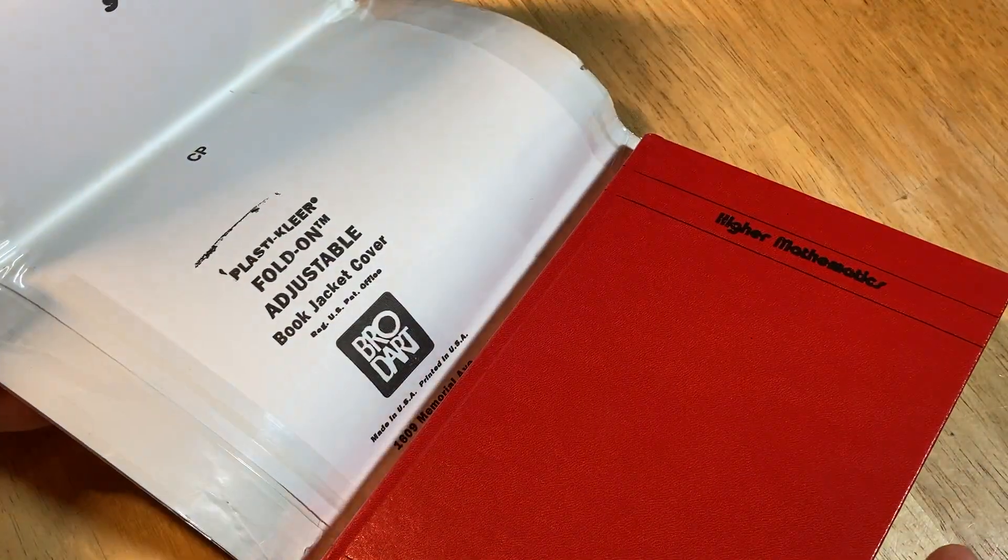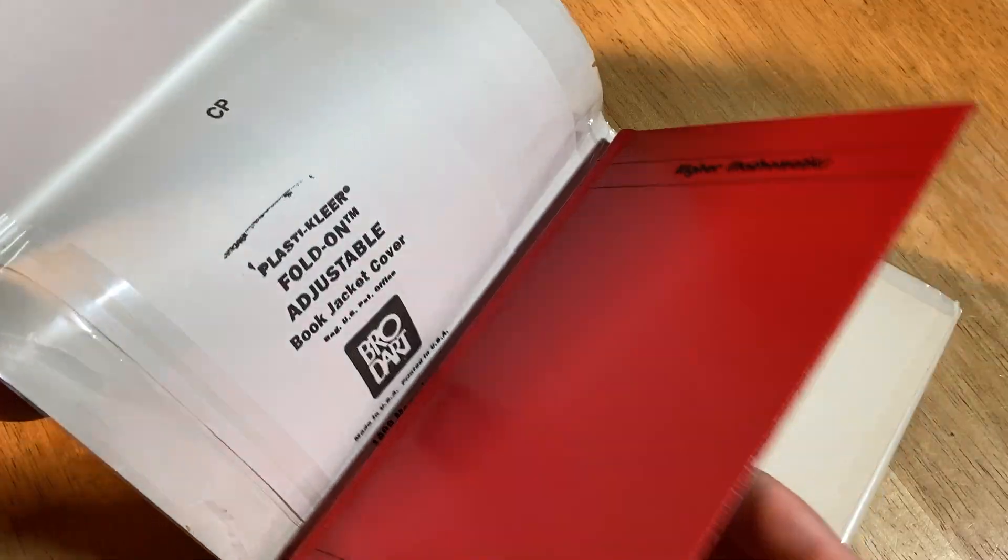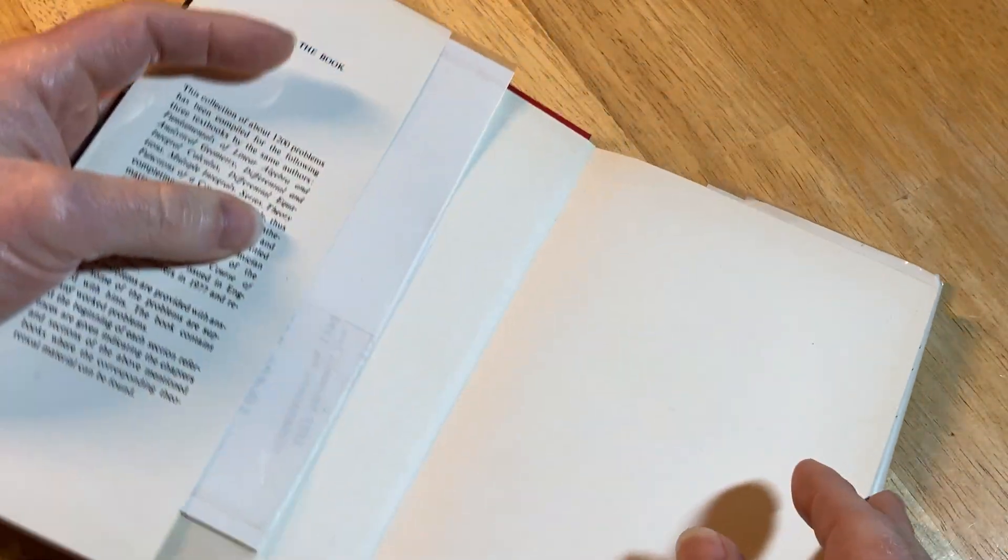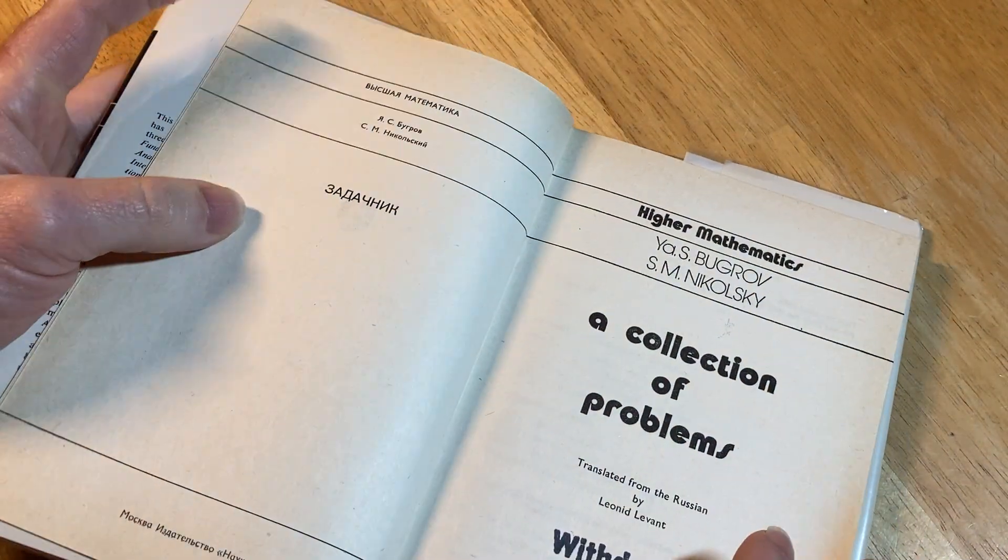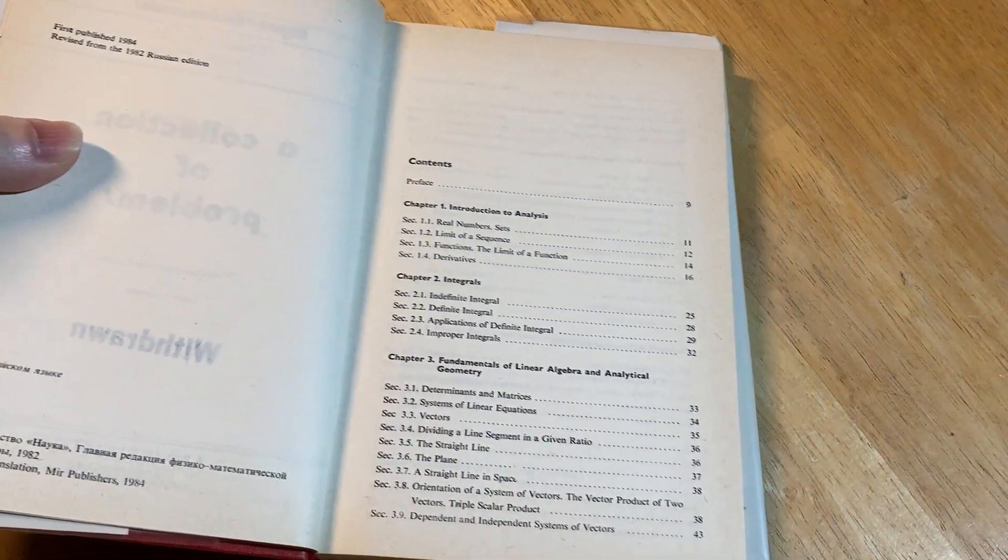Let me just take the dust jacket off just to see. That's what it looks like without the dust jacket there. It's a red book. Just to see what it looks like without the dust jacket. Typically, if you can find any copies, the ones with a dust jacket are worth more.